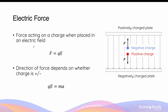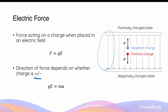Electric field strength is defined as the magnitude of force acting on a charge divided by the charge: E = F/Q. Rearranging gives F = QE, which is the most common way to calculate the magnitude of electric force due to an electric field. The direction of this force depends on whether the charge is positive or negative. For a negative charge in a uniform field, the force is towards the positive plate; for a positive charge, the force is in the same direction as the field lines, towards the negative plate.